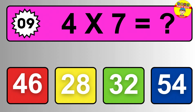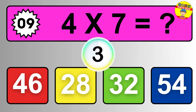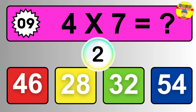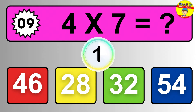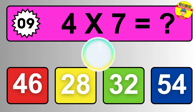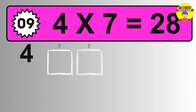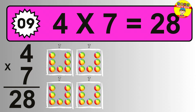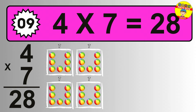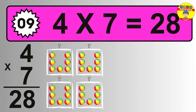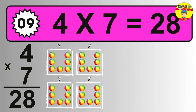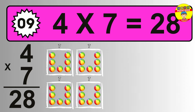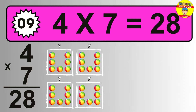Question nine. Four times seven equals what? The answer is four times seven is twenty-eight. To calculate, we have four groups with seven balls each one. So how many balls do we have? Twenty-eight balls.